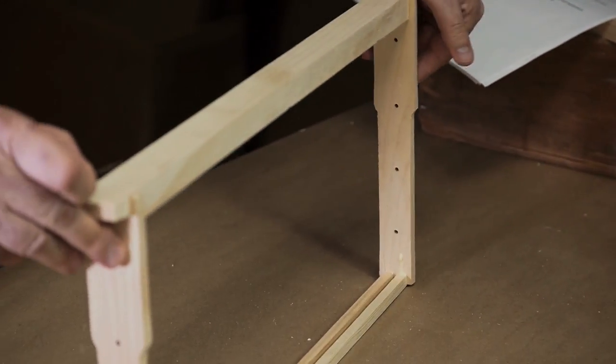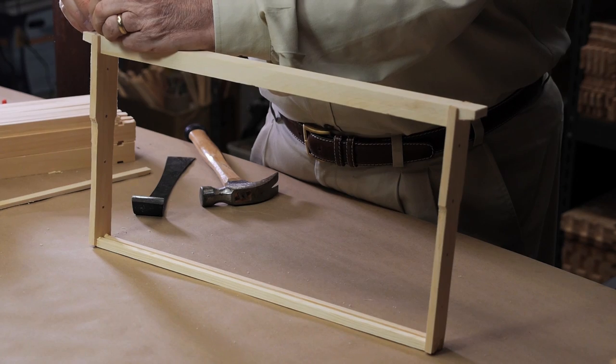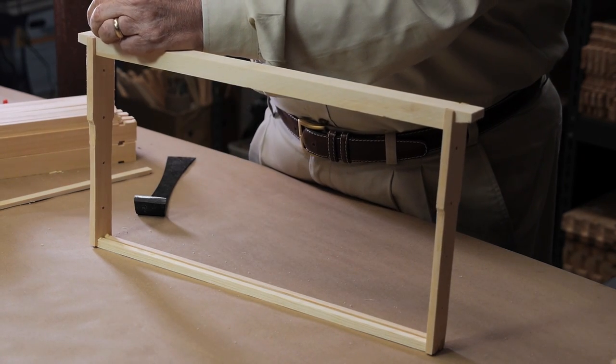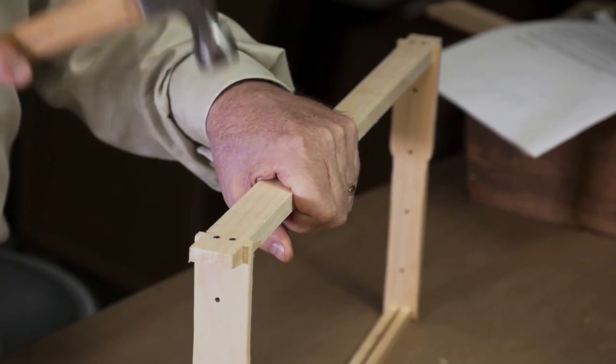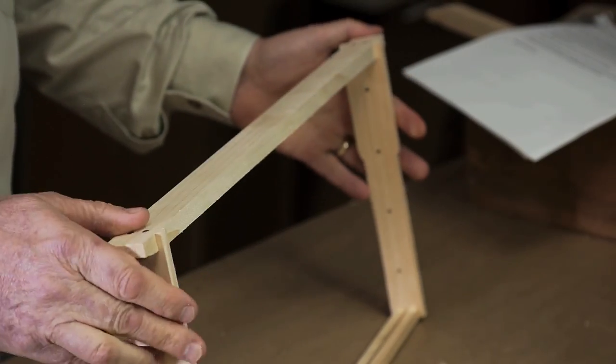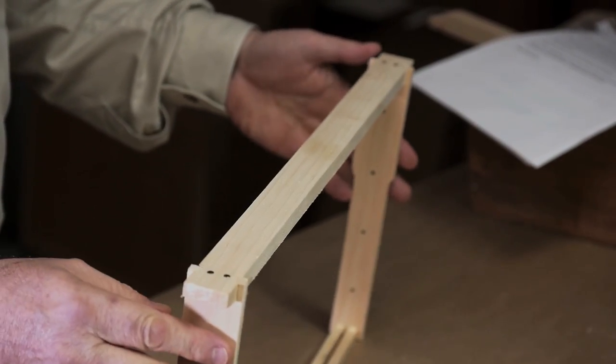Use eight nails per frame. Two for each end of the top bar, and one at each end of the bottom bar rails. Repeat these steps until all your frames are assembled.